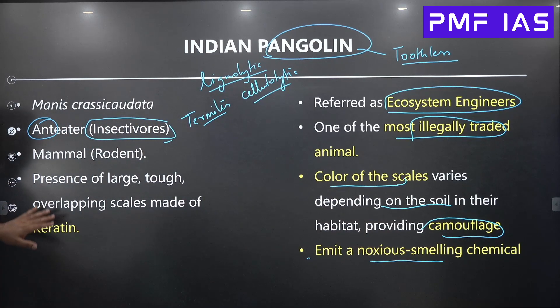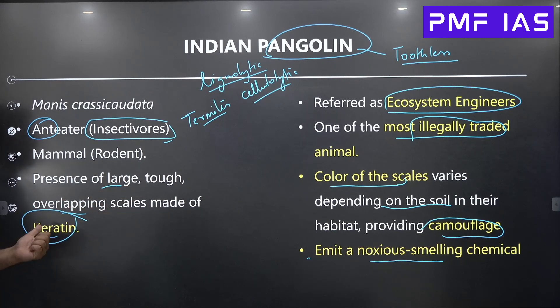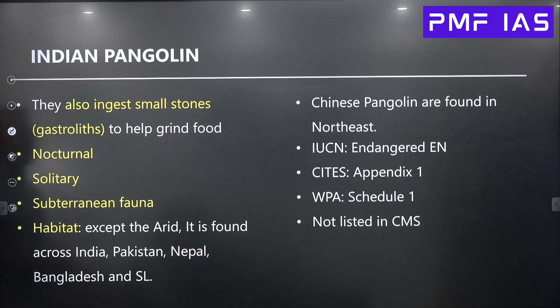The pangolin has large and tough overlapping scales made up of keratin. It is a mammal that comes under the rodent family.